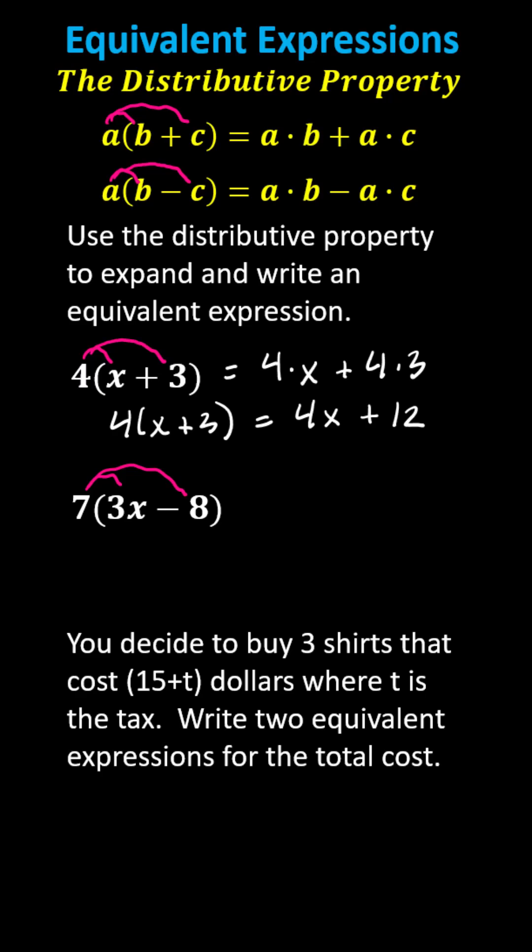The given expression is equivalent to seven times three X minus seven times eight, indicating seven times the quantity three X minus eight equals twenty-one X minus fifty-six.